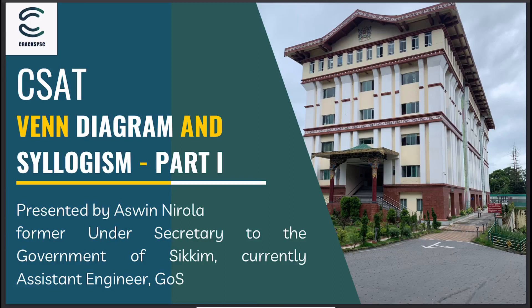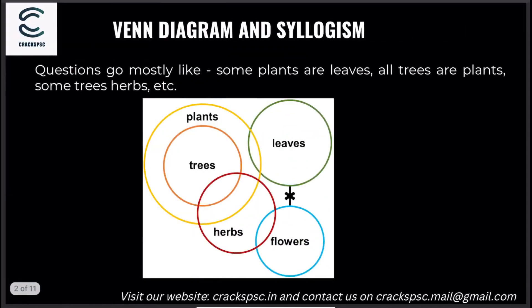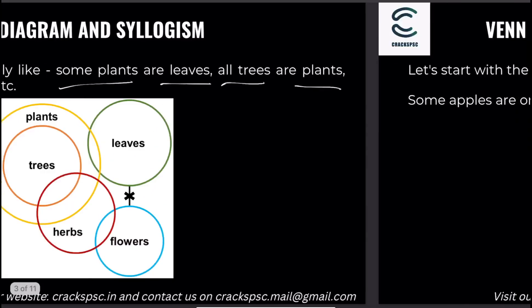Okay, let's go to the second topic. After patterns, we have syllogism — also called Venn diagram questions. For example: some plants are leaves, all trees are plants, some trees are herbs. This topic is in my opinion quite scoring, but it can also be tricky and confusing. Let me show you.